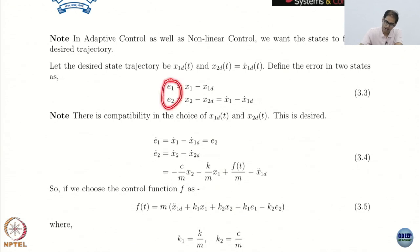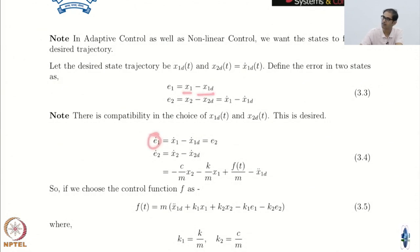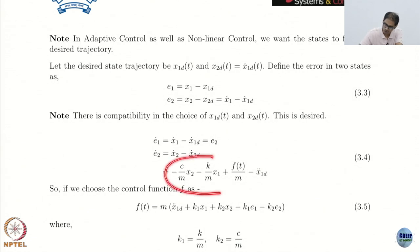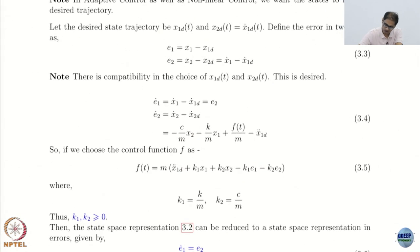Now I am going to write the dynamics of the error, because that is the system I will work with. I will always work with the error system. So I write e1_dot and e2_dot. What is e1_dot? It is x1_dot minus x1_desired_dot, which is exactly e2. This happened because of the matching condition. Then I compute e2_dot, which is x2_dot minus x2_desired_dot. X2_desired_dot is just a function of time, and x2_dot comes from the dynamics. So this is my error dynamics, and I want to drive e1 and e2 to 0.